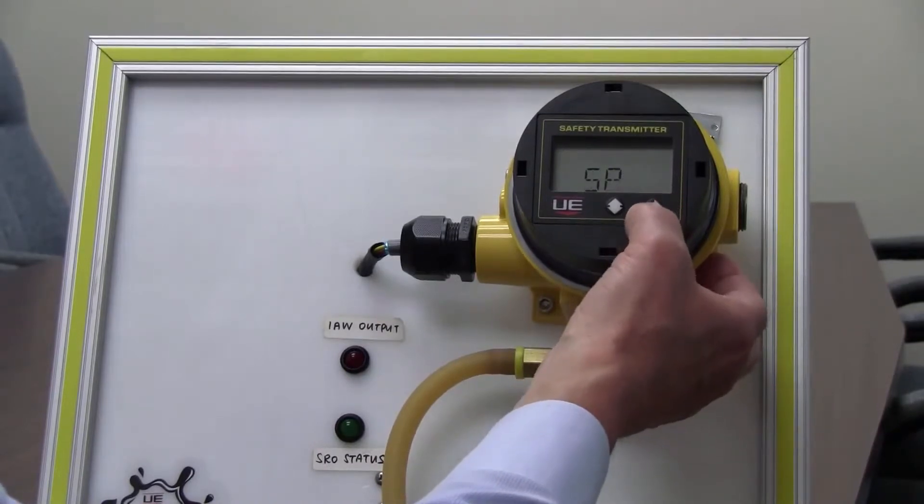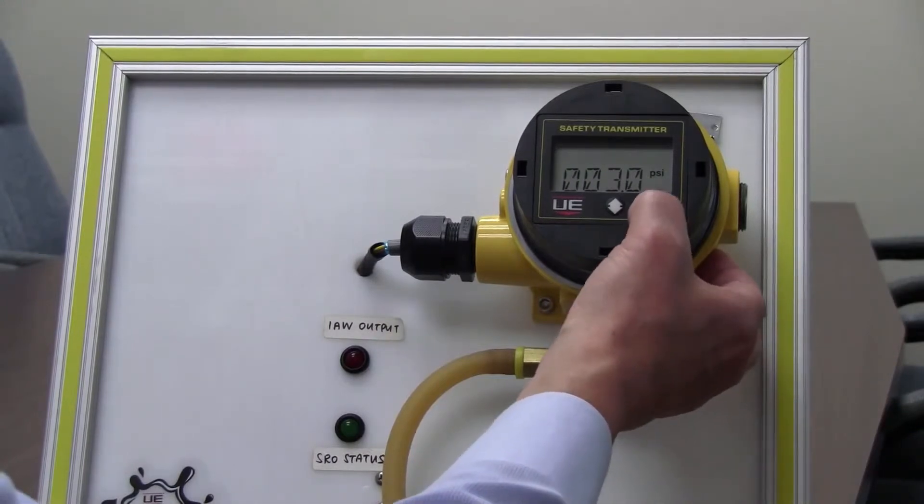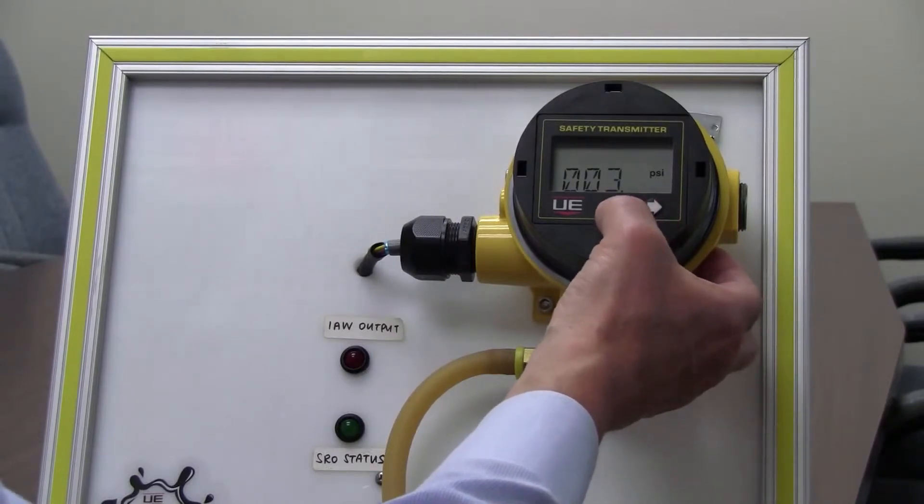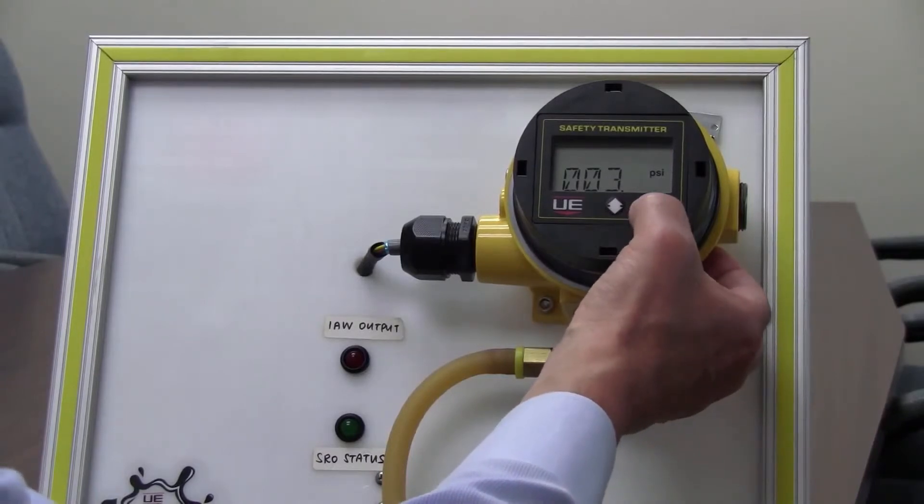If I hit the right hand arrow, set point is currently set to 3.0 psi. If I'd like to change any of those numbers, I simply scroll to the number or the digit, increment it using the up down arrow and then continue on.